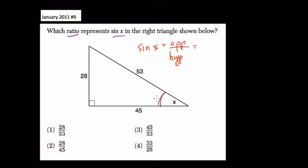here we plug in the side opposite of the angle, which is this side right here, and we plug in the hypotenuse here. So the sine of angle x is equal to the ratio of 28 over 53, and that's choice one.